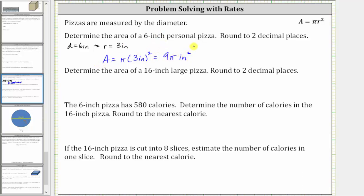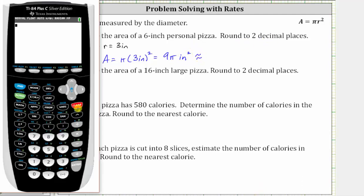We're told to round to two decimal places, so we'll go to the calculator and enter nine pi. The pi key is second, then the caret exponent key, then enter. Because we have a four in the third decimal place, we round down — the area is approximately 28.27 square inches.